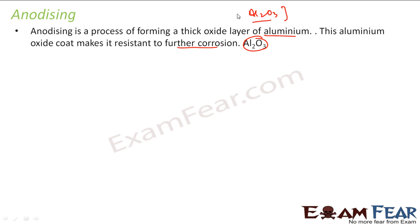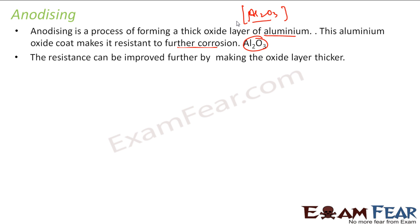By doing this, we are making the aluminium utensils more resistant to corrosion. So how do we do this? How do we improve the resistance by making a thick layer of oxide?